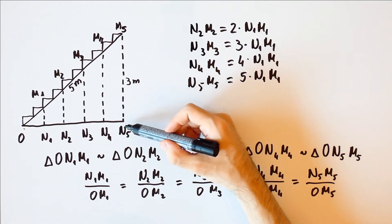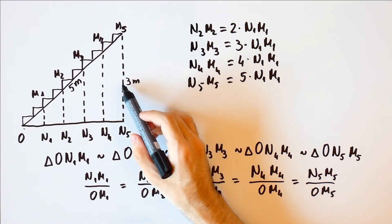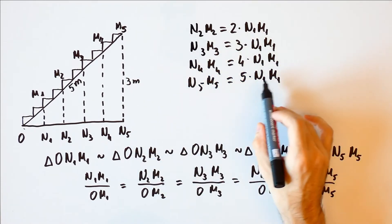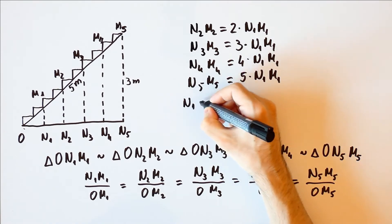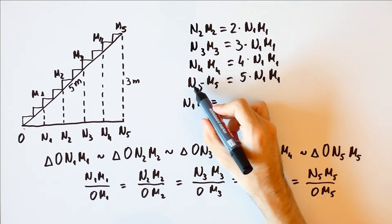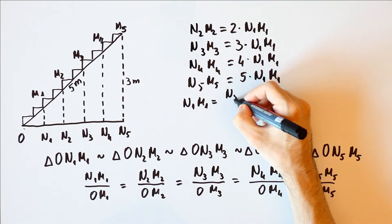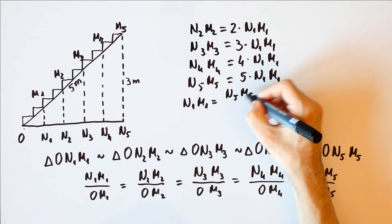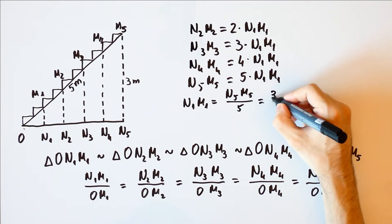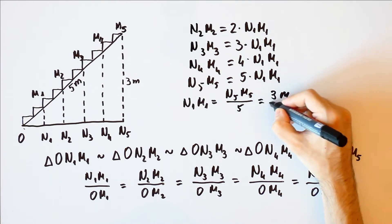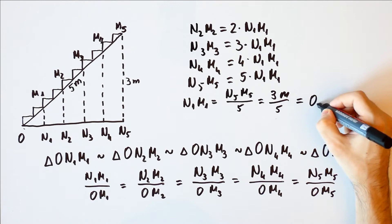But we know that N5-M5 is 3 meters, which means that N1-M1 is equal to N5-M5 over 5, which is equal to 3 meters over 5, and that is equal to 0.6 meters.